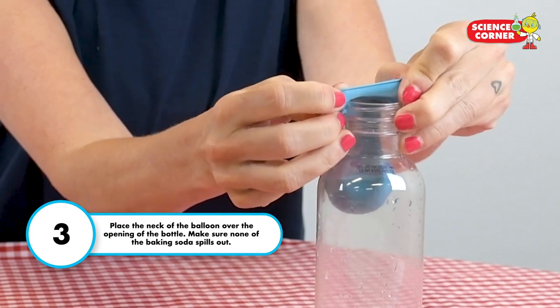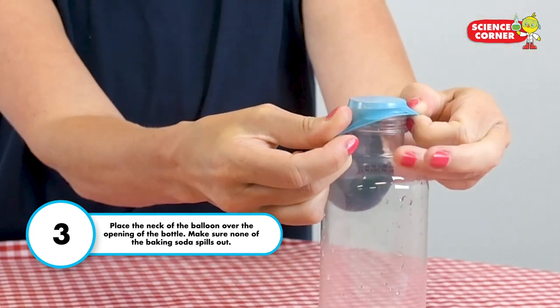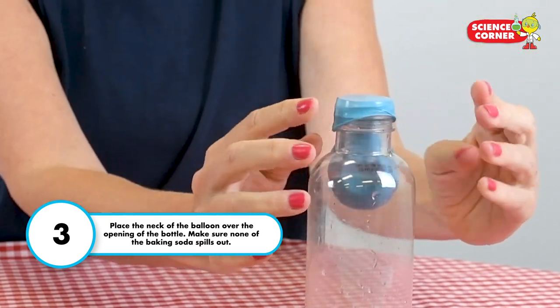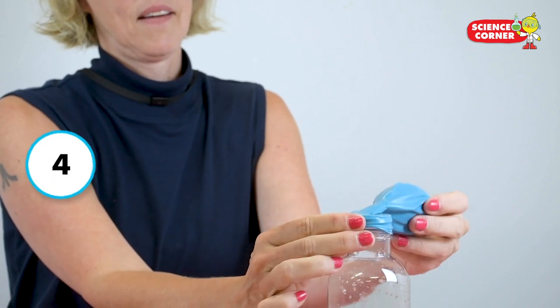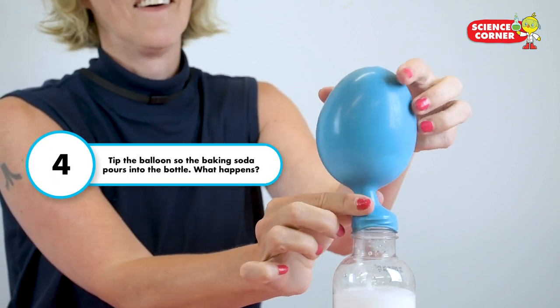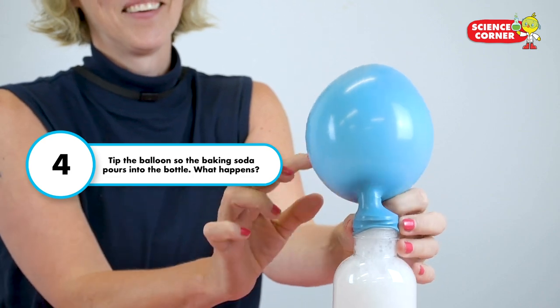Step 3: place the neck of the balloon over the opening of the bottle. Make sure none of the baking soda spills out. Step 4: carefully tip the balloon so the baking soda pours into the bottle. What happens?